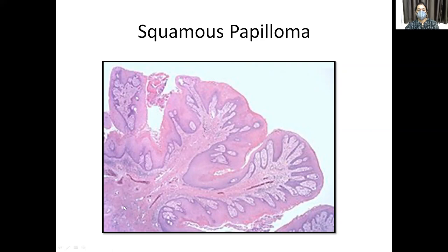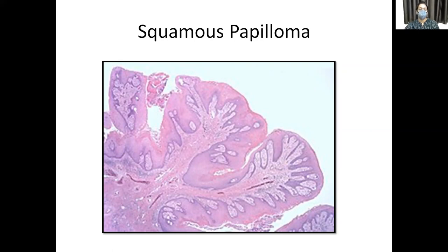In the high-power picture of squamous papilloma, this is the papillary structure lined by squamous epithelium with a fibrovascular core containing fibrous tissue and vessels supplying it. The finger-like projections are above the skin surface, lined by benign stratified squamous epithelium. In benign lesions, cells appear uniform with no nuclear enlargement — just hyperplasia and sometimes hypertrophy.